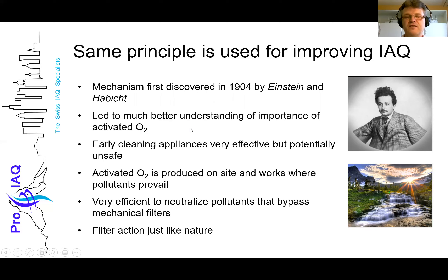If the oxygen is activated, it's alive and we feel alive. If there's no activated oxygen, we feel depressed. Einstein built some cleaning appliances which were very effective, but also unsafe because he could not control the output of ozone. He learned that activated oxygen has to be produced on site — it cannot be stored in a bottle. This system is very efficient to neutralize pollutants that bypass mechanical filters.